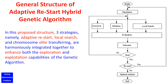In this research, an innovative structure of genetic algorithm, in which adaptive restart, local search, and chromosome elite transferring strategies are harmoniously integrated together, is proposed to improve the success rate of achieving global optimal solution of the traditional genetic algorithm. The robustness of the proposed genetic algorithm structure is demonstrated through a number of case studies and benchmark optimization problems.